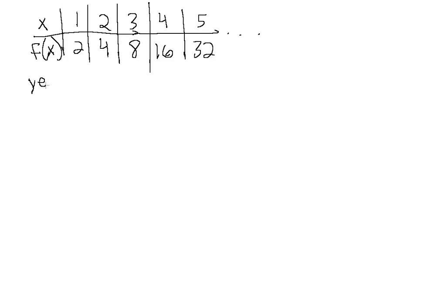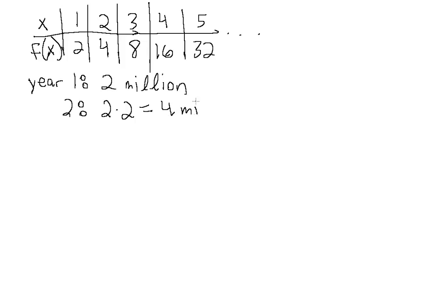In year one they sold two million computers. In year two they sold four million, which is two times two. In year three they sold eight million, which is two times two times two. In year four they sold 16 million, which is two times two times two times two. When we multiply a number by itself several times, we can use what's called exponential notation. This is identifying patterns, which is very important in higher mathematics.